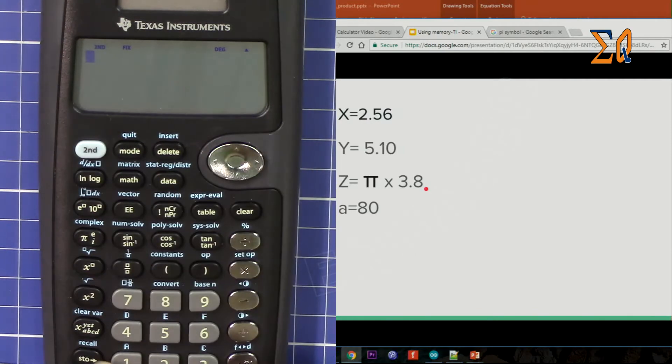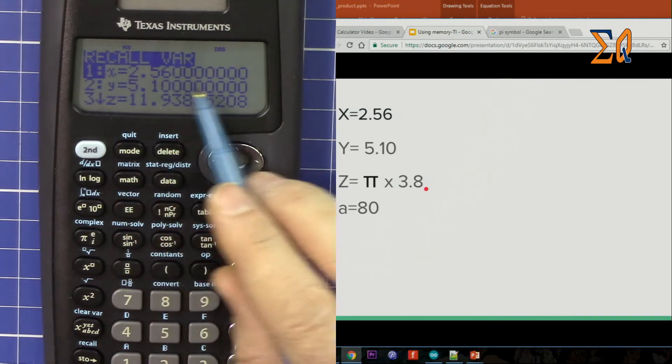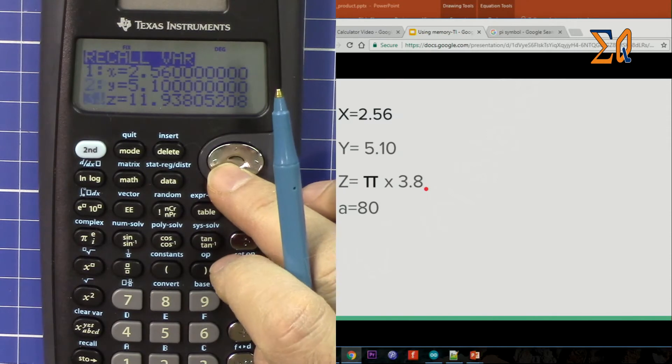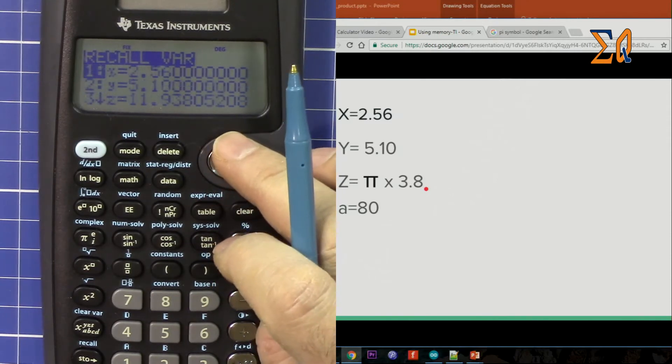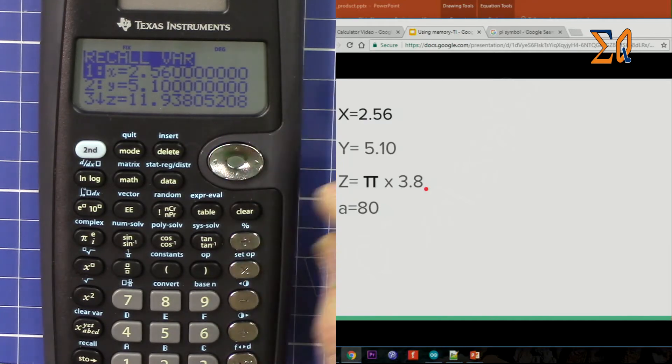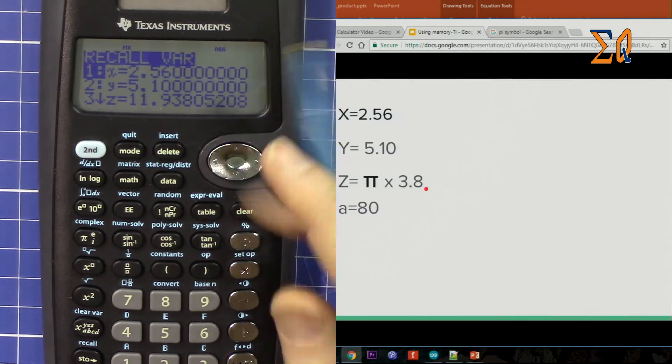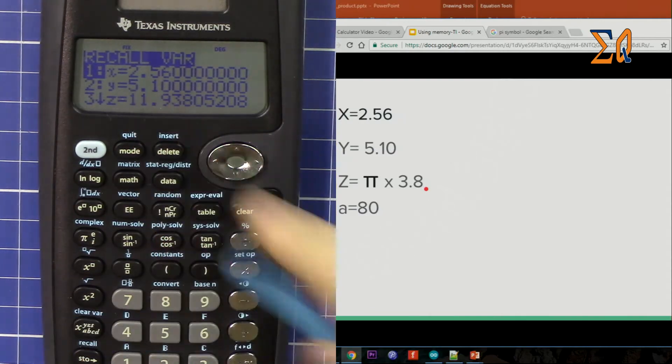So to recall any values, this is the recall button here. We can press second function recall. Once you press it, the calculator will show you real-time all the values, which is better than any other calculator so far except the latest Casio FX-991X which shows. Other calculators don't show it.